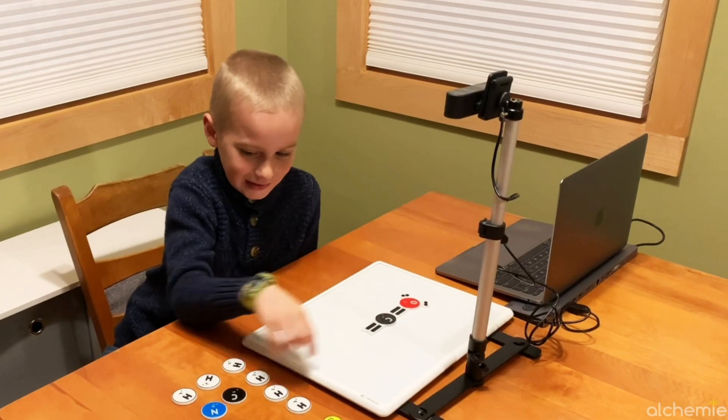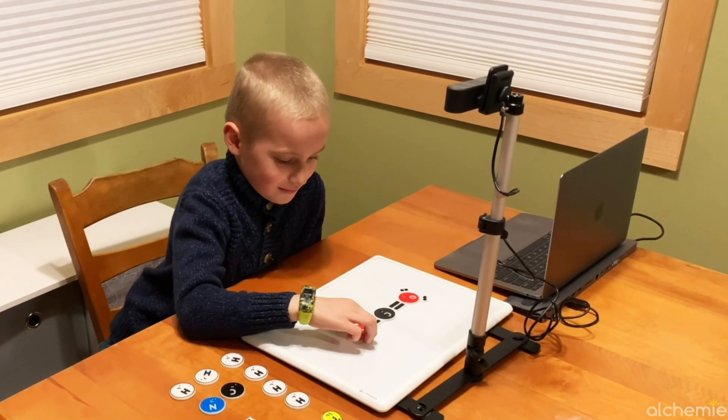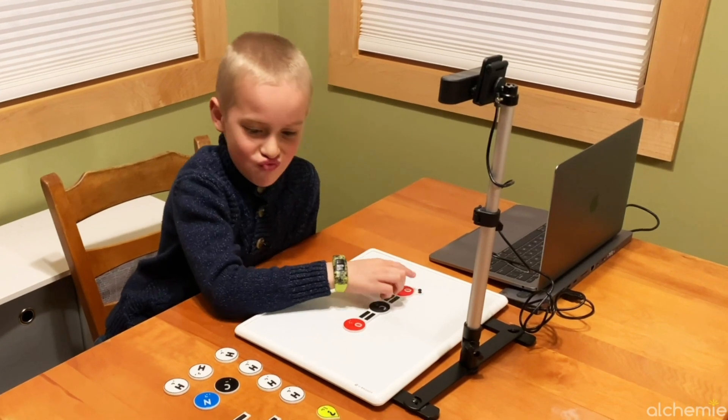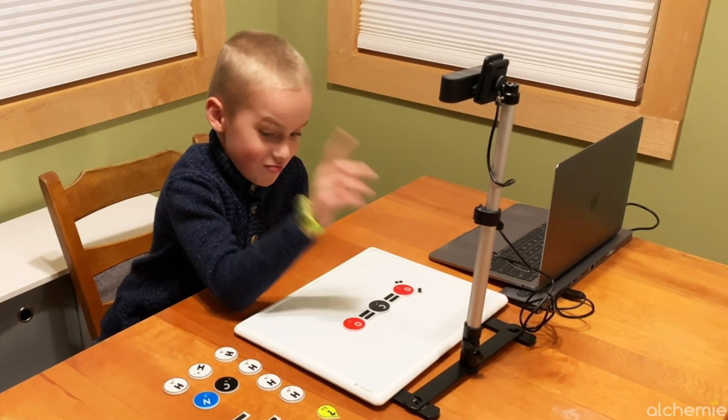Using this tool, sighted students, not just blind students, but all students can work with manipulatives to create Lewis structures and then using its artificial intelligence see what they've created in the same form that they learned originally using a pen and paper to draw out Lewis structures by putting down atomic symbols and then connecting them with bonds and adding lone pairs.